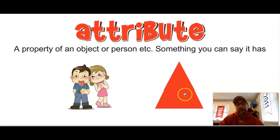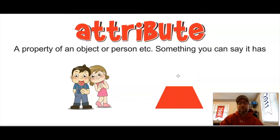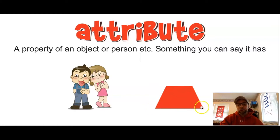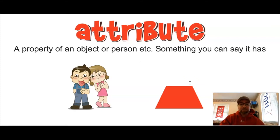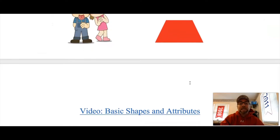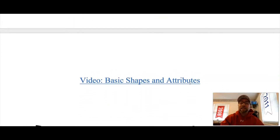Shapes also have attributes. Here's my little triangle — I can turn that into a trapezoid. My trapezoid has attributes: it's red, it has four sides, it has four corners, and it's probably medium size. So just like people can have attributes, so can shapes. We're going to be taking a look at a short video that's going to talk about some basic shapes and their attributes.